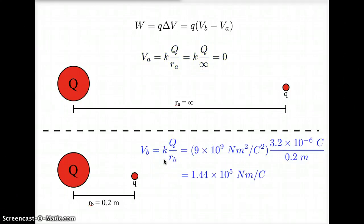Moving to the electric potential at the ending configuration, it's again k times Q over r. At the end of the problem, r is going to be 0.2 meters. When I plug in the value for k and the charge Q, which is causing this electric potential, I get a value of 1.44×10^5 newton meters per coulomb.